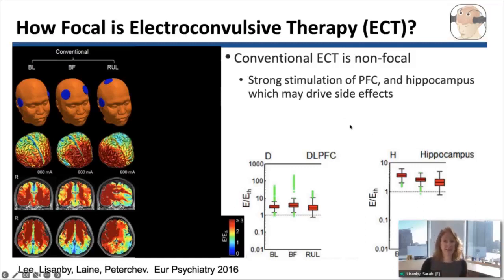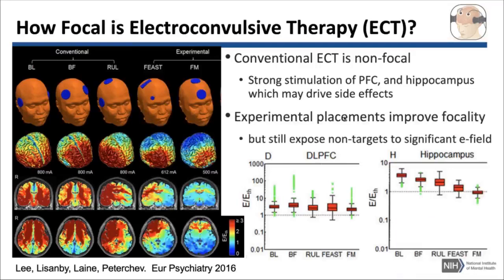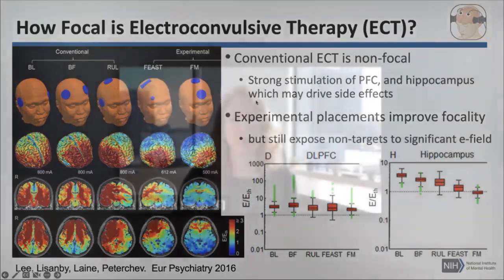We are concerned about this because stimulation of the hippocampus and other brain regions which are non-targets might drive the cognitive side effects of ECT. So we'd like to make it more focal to avoid the inadvertent side effects. Some experimental electrode placements like FEAST or frontal medial electrode placement can do a little bit better, but they're still exposing non-targets to significant electric field strengths.